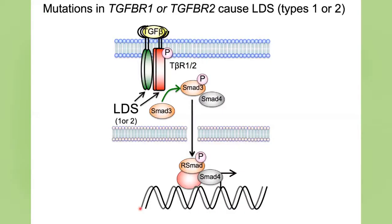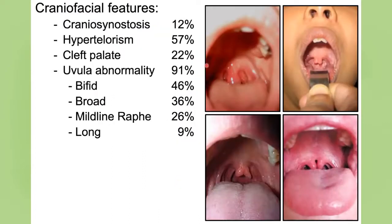As you might expect, a condition that looks much like Marfan syndrome in many ways also relates to altered TGF-beta signaling. Here, the mutations are in either of the two subunits that make up the receptor for TGF-beta — either the type 1 or type 2 receptor — causing Loeys-Dietz syndrome type 1 or type 2, respectively. I wanted to briefly review the systemic findings of this disorder, as people are going to encounter patients with Loeys-Dietz syndrome in their practice.